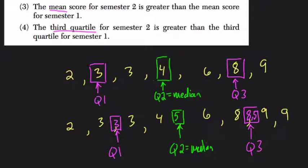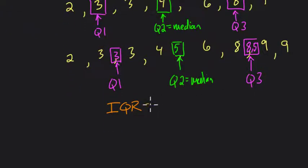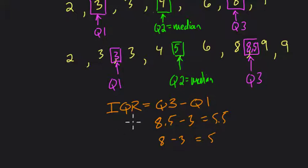Now, the interquartile range uses this idea. The interquartile range is simply, you can write IQR if you want. IQR, the interquartile range, if you think about the word as saying, it's the range between the quartiles, specifically the third quartile minus the first quartile. So what would our interquartile ranges be here? Well, in this case, it would be 8.5 minus 3, which is 5 and a half. And then the other case here would be 8 minus 3 or 5. So that's how we find our IQRs in both cases.